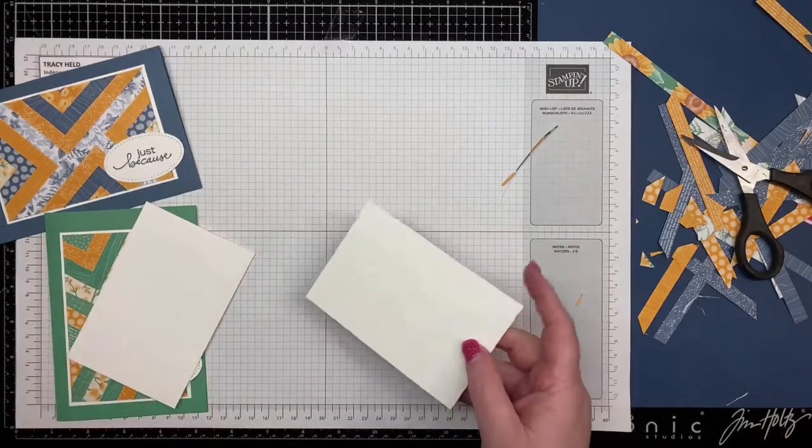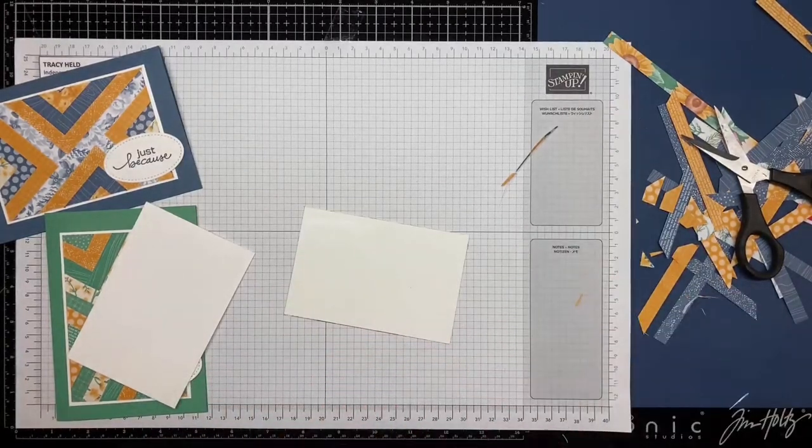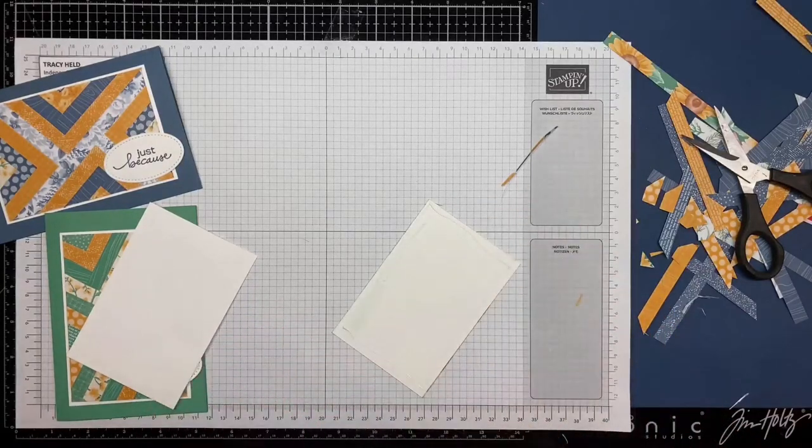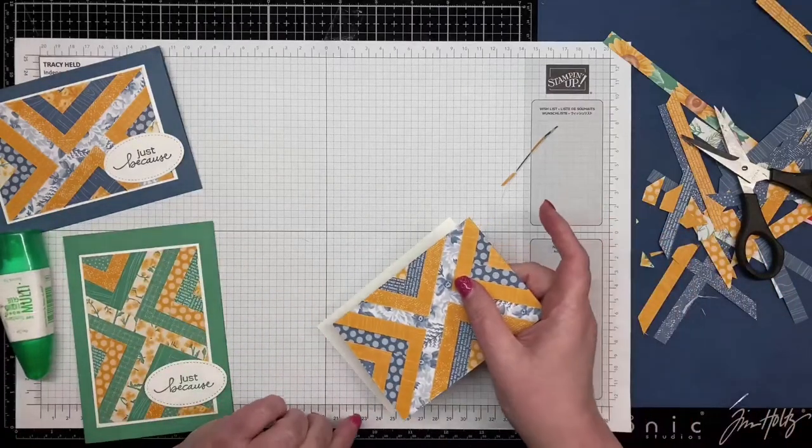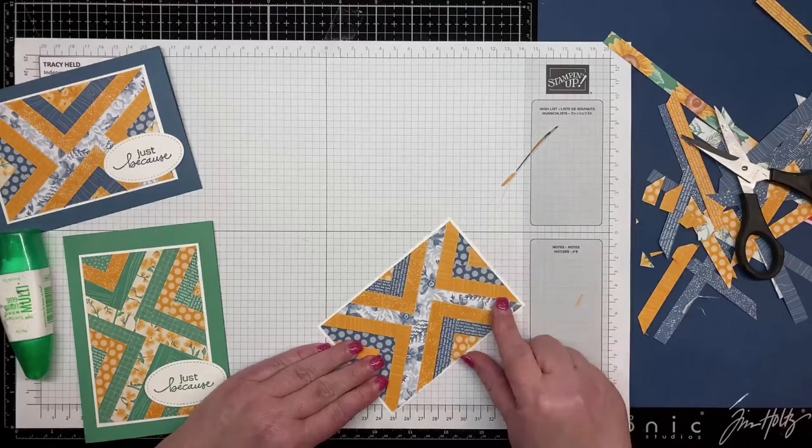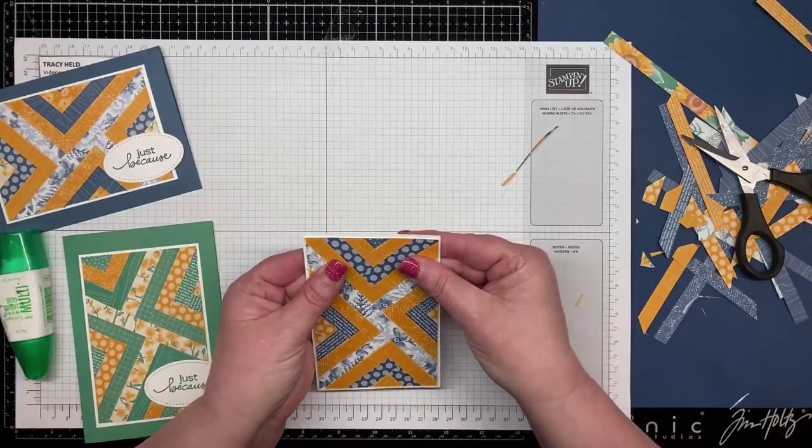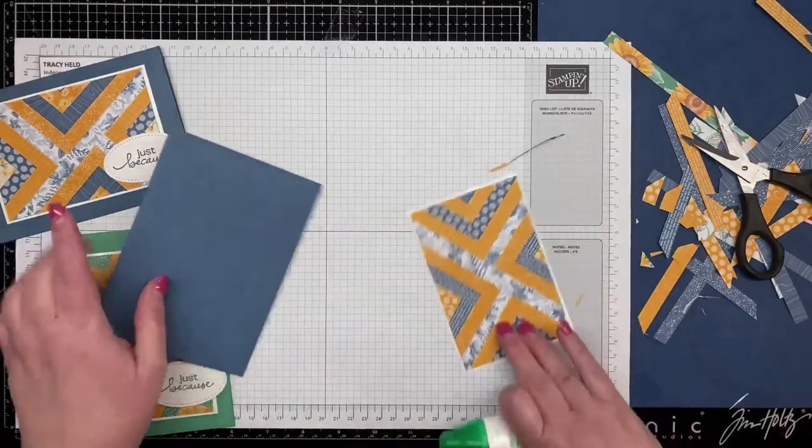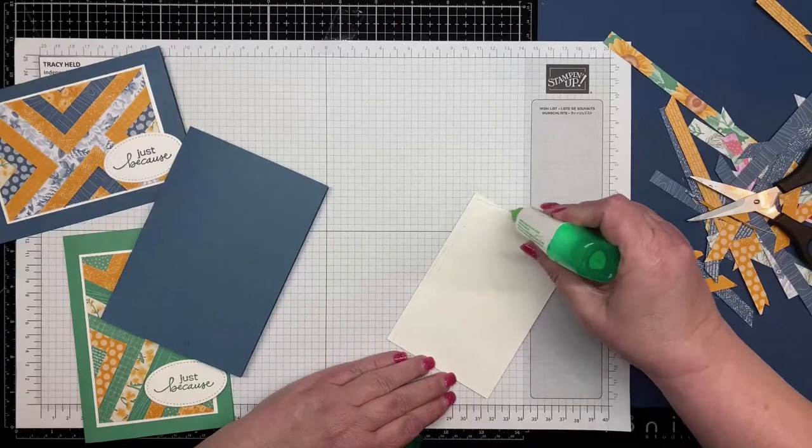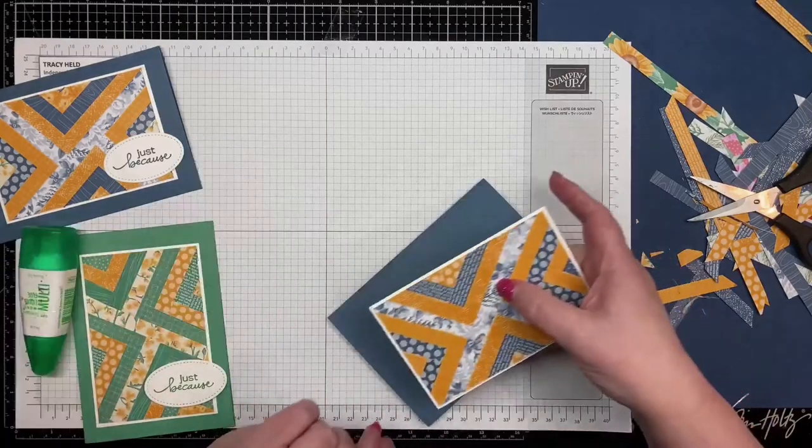And then I am going to layer that onto another piece of cardstock which is just slightly larger so that I've got a little white edge showing through, and layer that onto my Misty Moonlight card base.